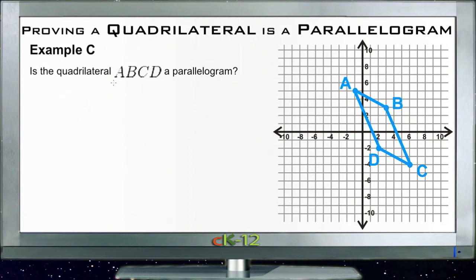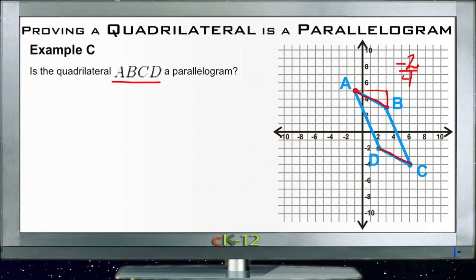For Example C, we need to prove whether ABCD is a parallelogram. The easiest way is to pick two opposite sides and show they are parallel and congruent. Starting with point A at (-1, 5) going to point B at (3, 3), we go over four and down two — a run of 4 and a rise of -2. Then from D at (2, -2) going to (6, -4), we also go over four and down two.